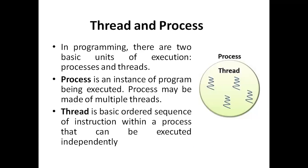In programming, there are two basic units: one is called a process and one is called a thread. We have seen that a process is an instance of a program being executed. Within a process, there can be multiple threads. A thread is the basic ordered sequence of instructions within a process — it is a subset of instructions from the process.